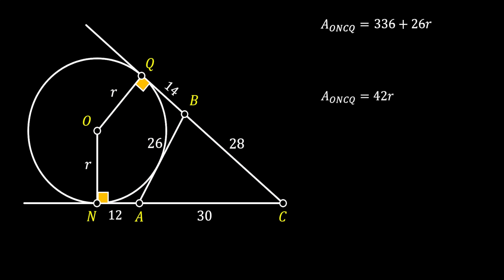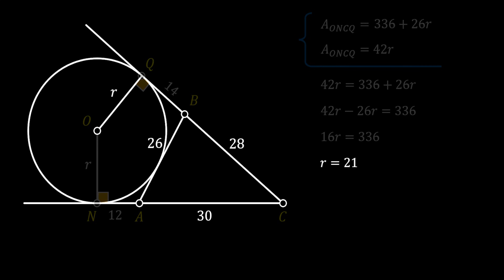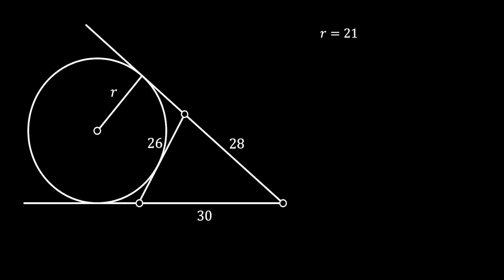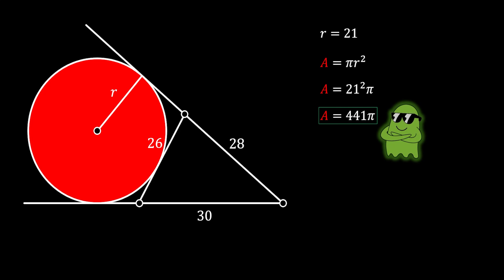Since we got two equations for the area of quadrilateral ONCQ, we can set them equal. Working through this equation, we get that the radius of our circle equals 21. The area of the circle is π r², and substituting r = 21 gives 21² π, which means the area of our red circle equals 441π square units. This is our solution.